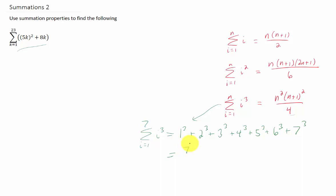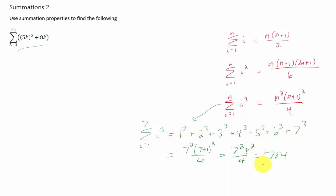So our sum is going to add up to 7 squared times (7 plus 1) squared over 4. That's 7 squared times 8 squared over 4. If you multiply this out, you get 784. So if you added 1 cubed plus 2 cubed all the way up to 7 cubed, that sum adds up to 784.